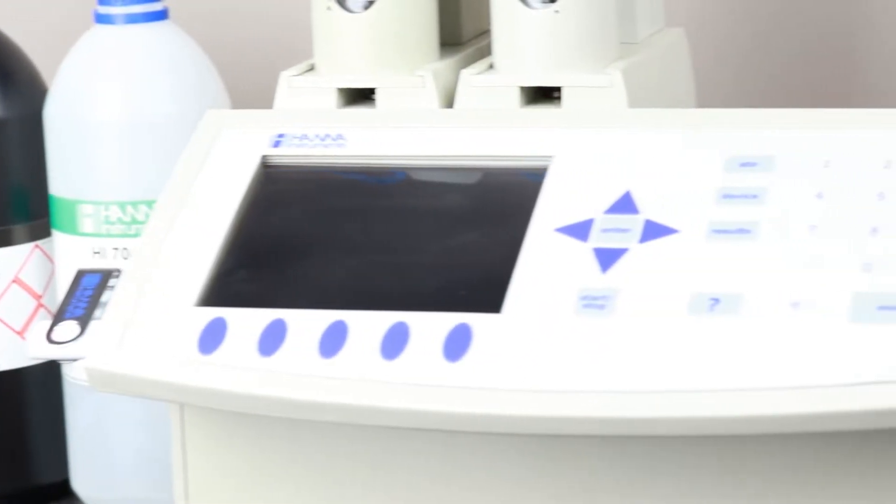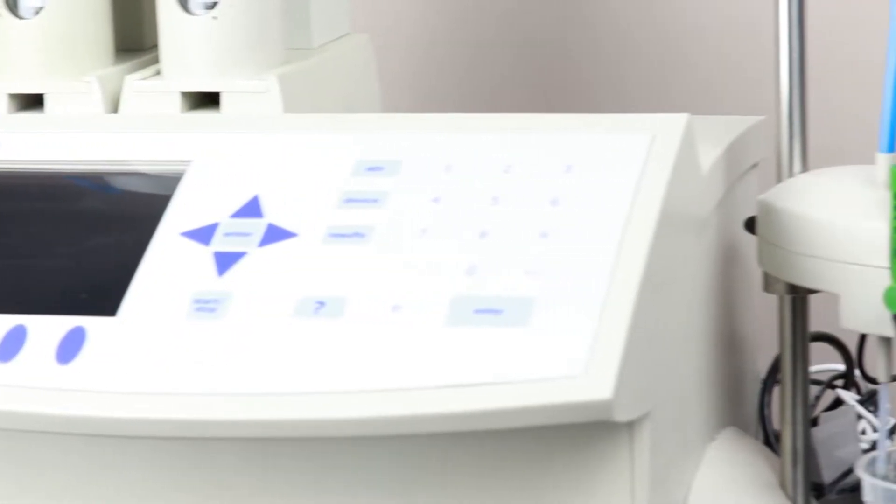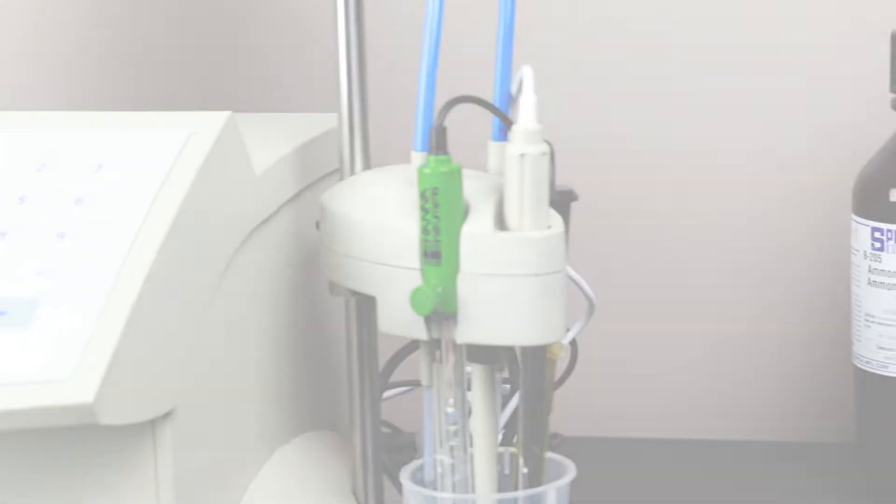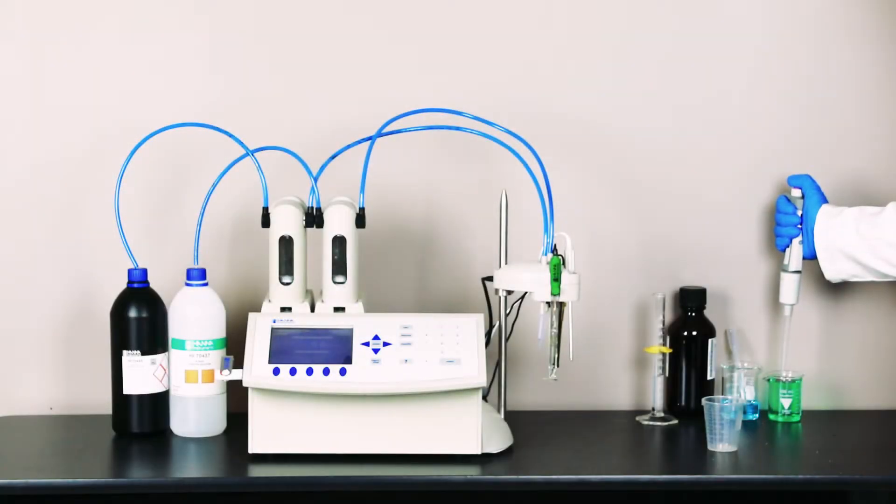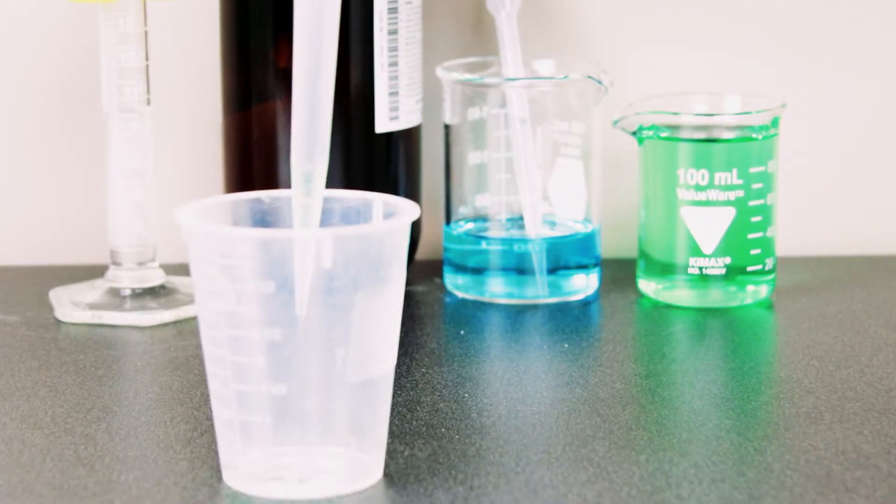We can also perform nickel titrations using the Hanna HI902 titrator. Doing this titration involves a few simple steps. First, add your sample and some distilled water to submerge the electrode.